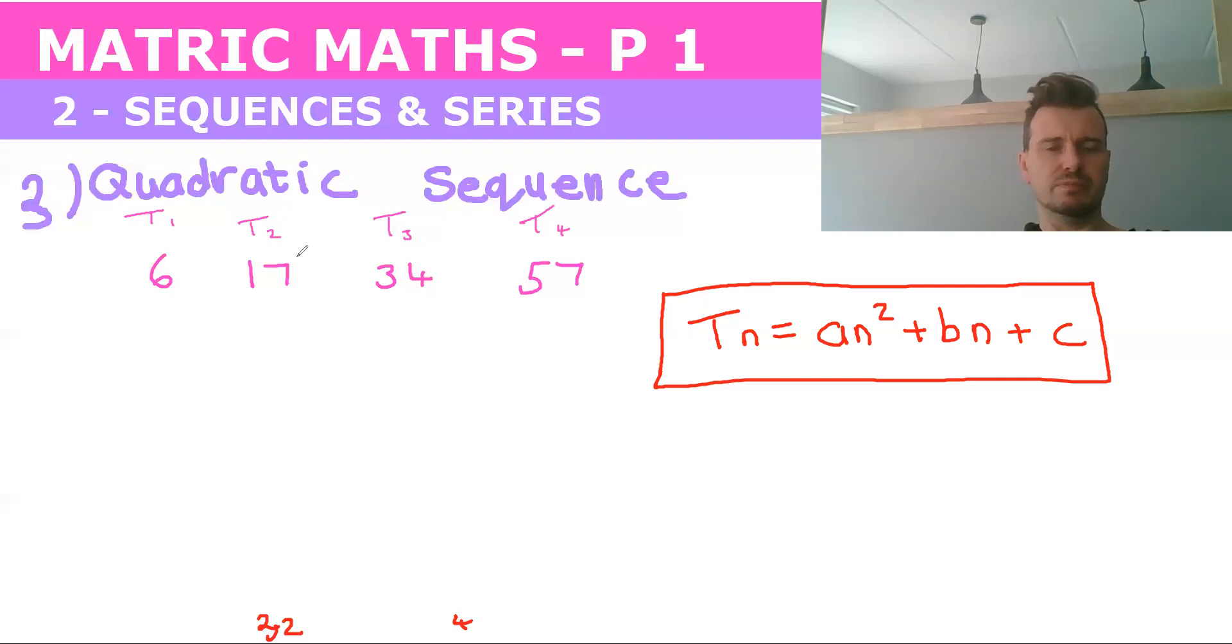So the first thing we do in identifying what type of sequence is we usually find the first difference. Okay, so 57 minus 34 is 23. 34 minus 17 is 17. And 17 minus 6 is 11. So we can rule out arithmetic sequence because we know there's no common first difference.